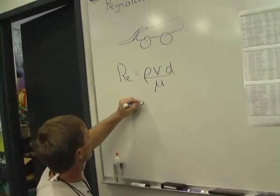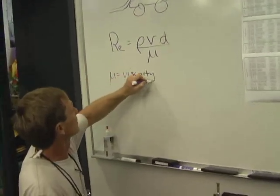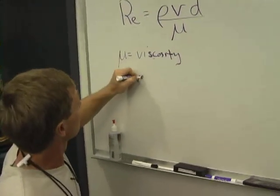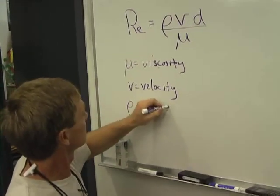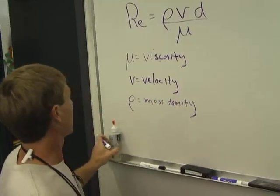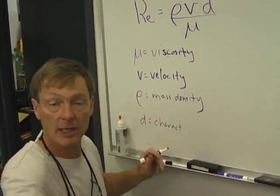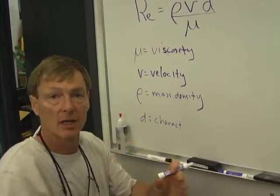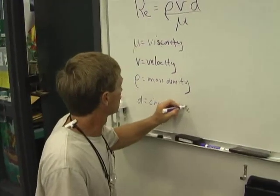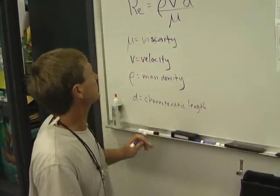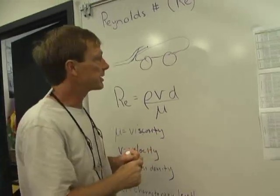So let me write those things down. Mu is viscosity, different than density, the ability of the material to stick together. And v is the velocity, rho is the mass density, and d is a characteristic length. Everything on the top drives you towards turbulence. Everything on the bottom makes the flow laminar.